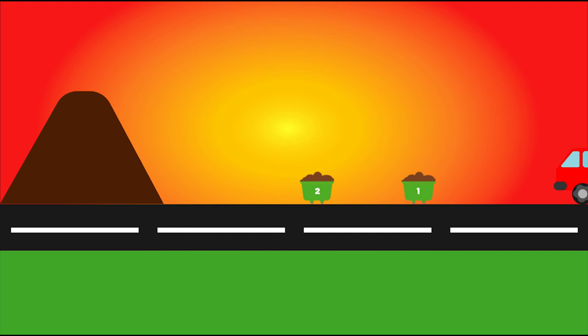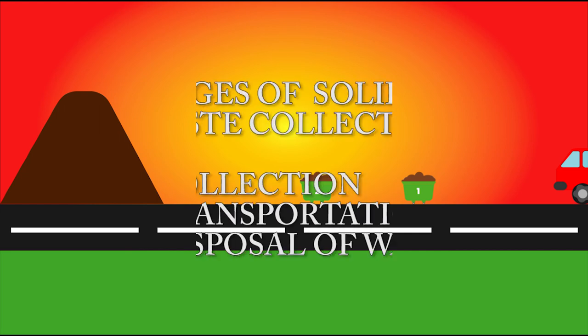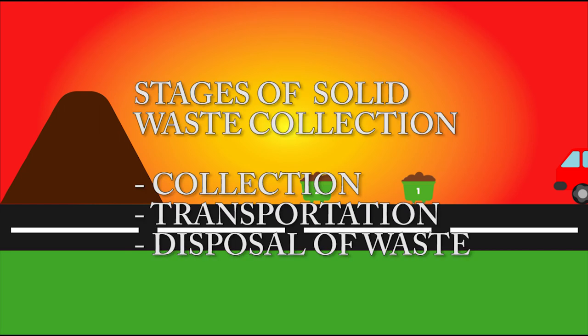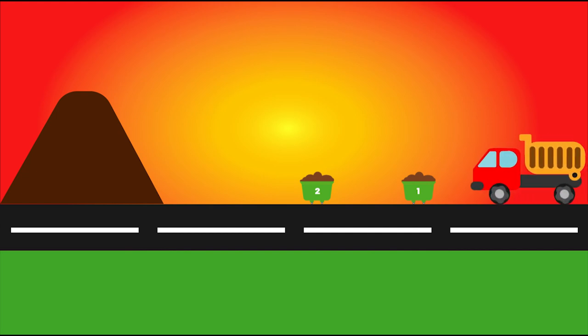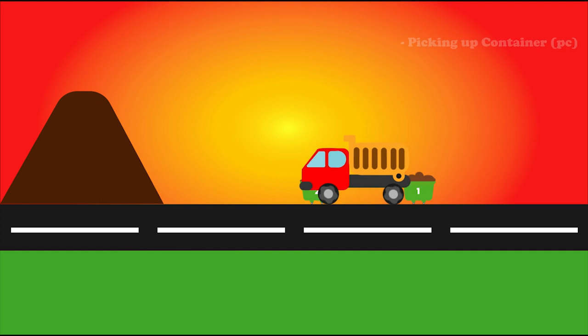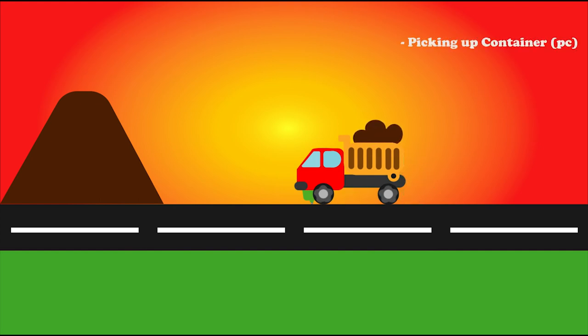As we know, the hauled container system consists of stages such as collection, transportation, and disposal of waste. Each stage has a particular time-consuming activity. A hauled container truck travels to the container position and picks it up. The time required to pick up that container — container 1, filled with waste — is termed as pickup time, denoted as PC.